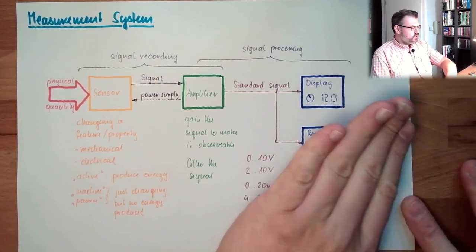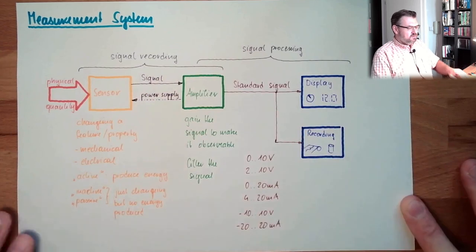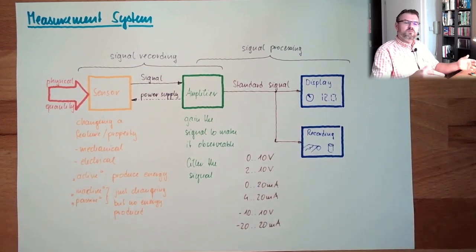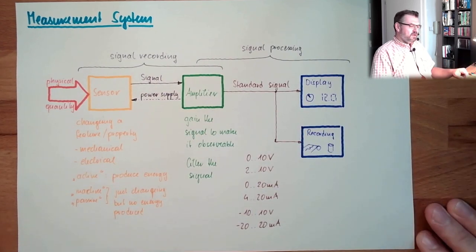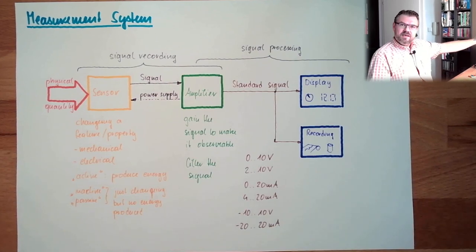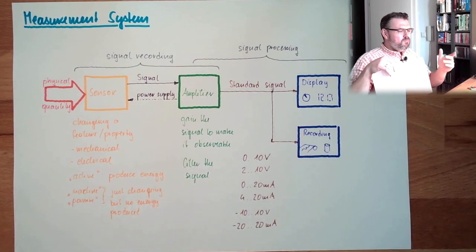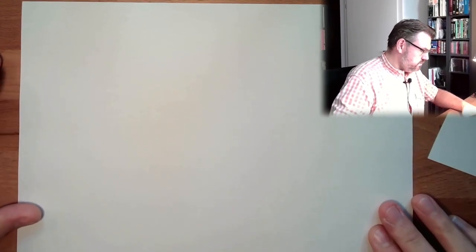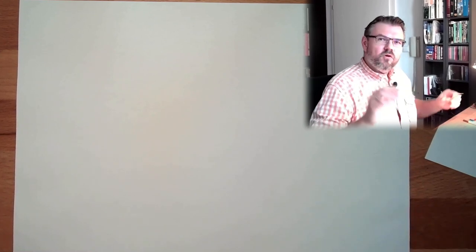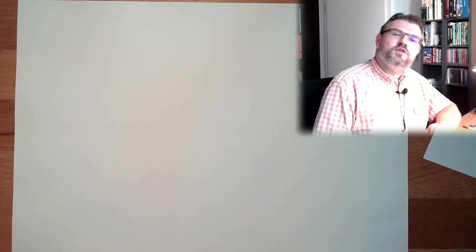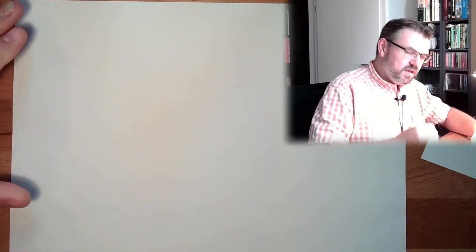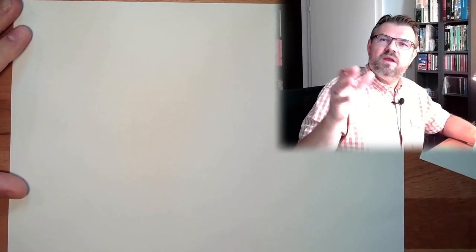So these standard signals are very usual, and also the processing and displaying items are usually adapted to the standard signals. For instance, if you're recording with the help of a PLC — a programmable logic controller — then there are analog input cards which can read 4 to 20 milliamps, or 0 to 20, or 0 to 10 volts. You can buy them off the shelf, and this makes things easier to use standards. So this is the basic structure of a measurement system.